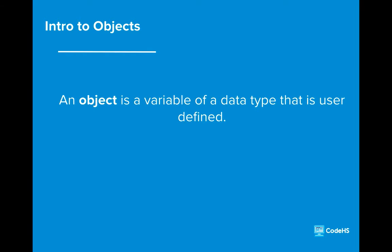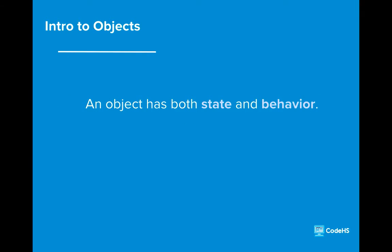Objects are variables of user-defined data types. Just as we initialize and declare primitive types, reference types are also declared and initialized. The initialized form of a reference type is referred to as an object. It's essential to understand that objects consist of a particular state and behavior. We are going to explore a specific example to better understand this idea.